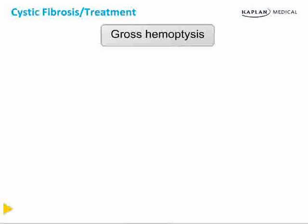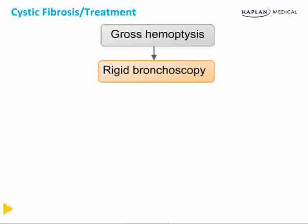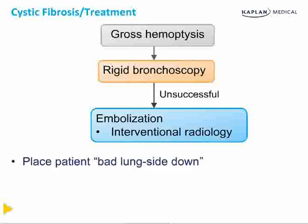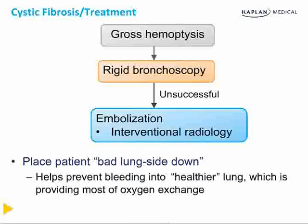Let's end by discussing the management of gross hemoptysis. Patients with CF sometimes develop gross hemoptysis as a result of a brisk bronchial bleed. These can be life-threatening — not because of exsanguination, but because of airway obstruction and asphyxiation. The approach should be: begin with rigid bronchoscopy, and if unsuccessful in stopping the bleeding, move on to embolization performed by an interventional radiologist. One key point often tested on Step 2 is that you should place the patient with their bad lung down, which prevents bleeding into the healthier lung that is providing most of the patient's oxygen exchange.